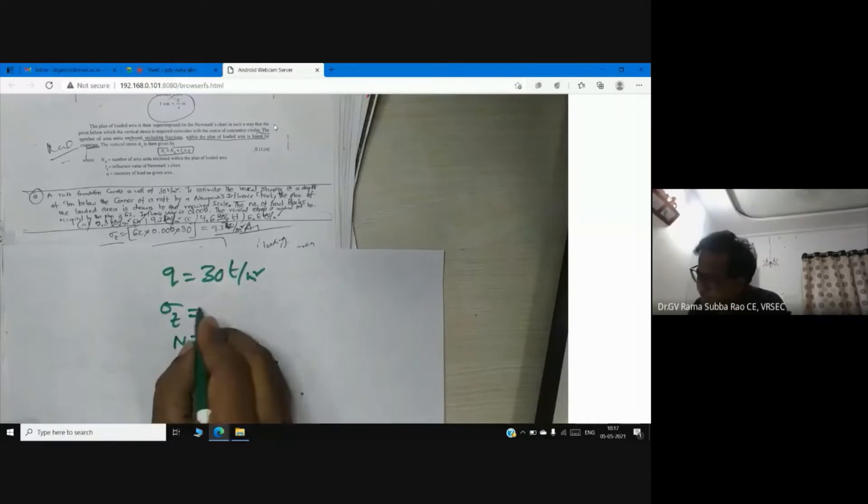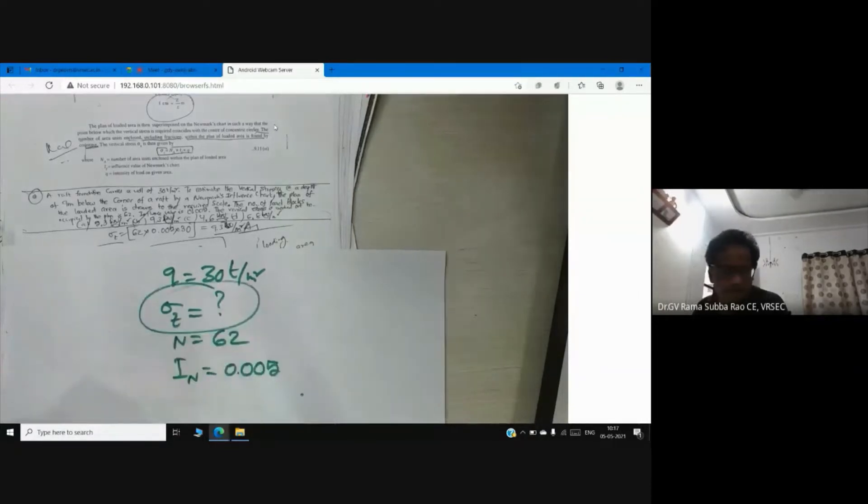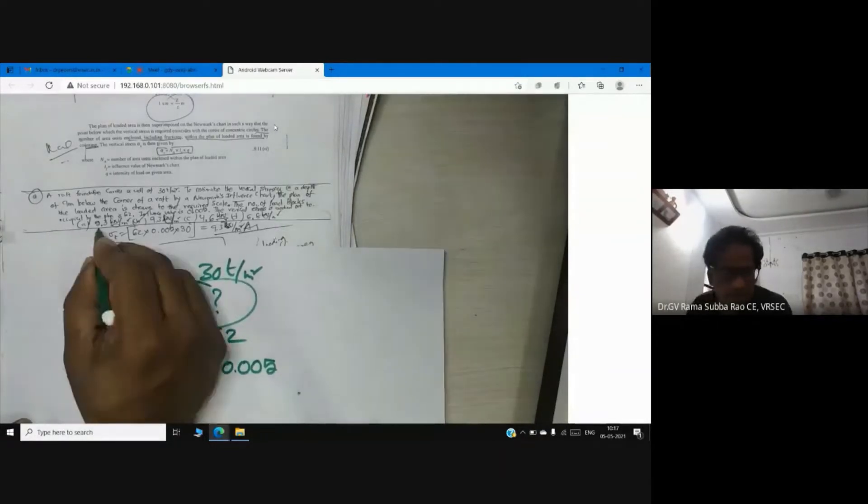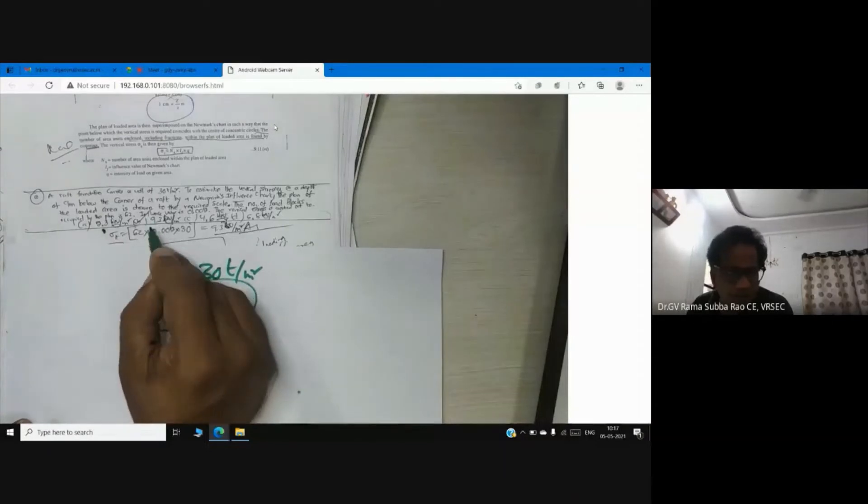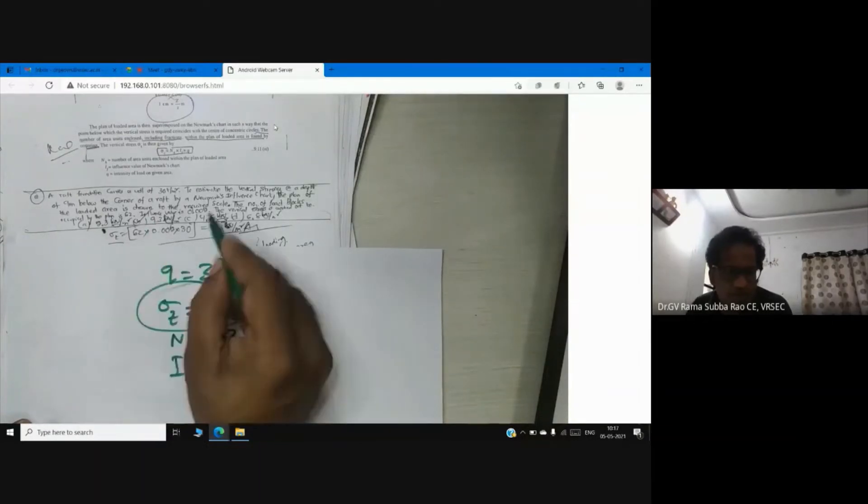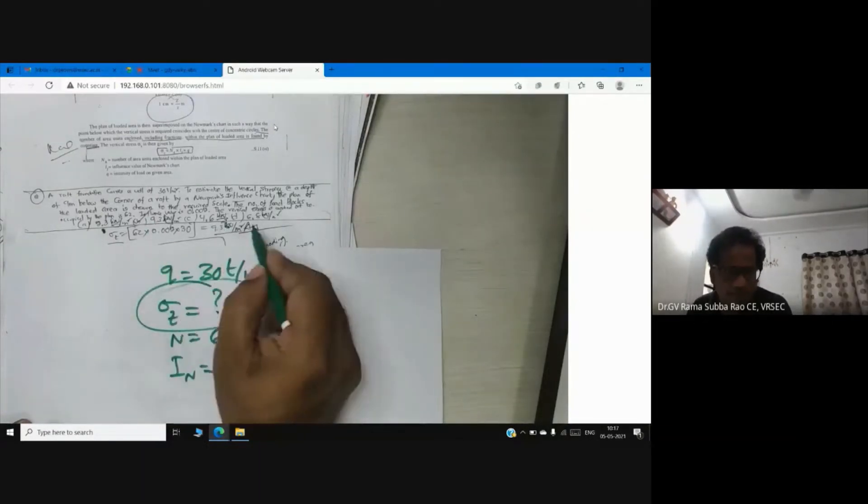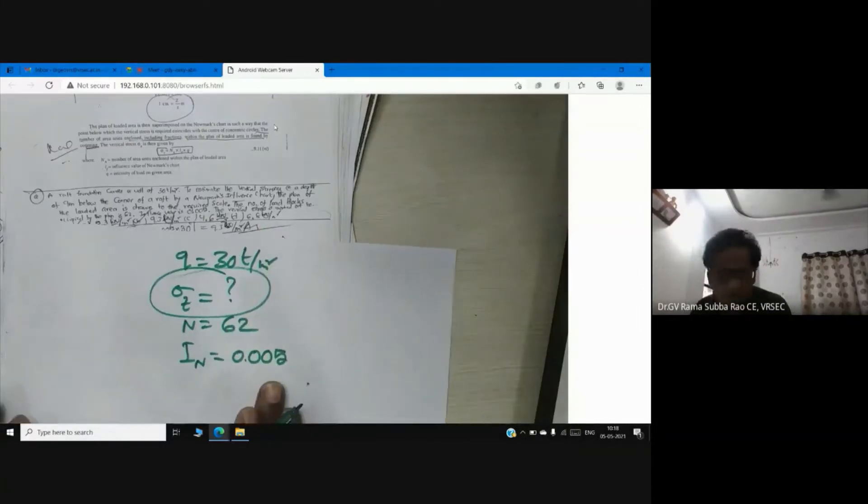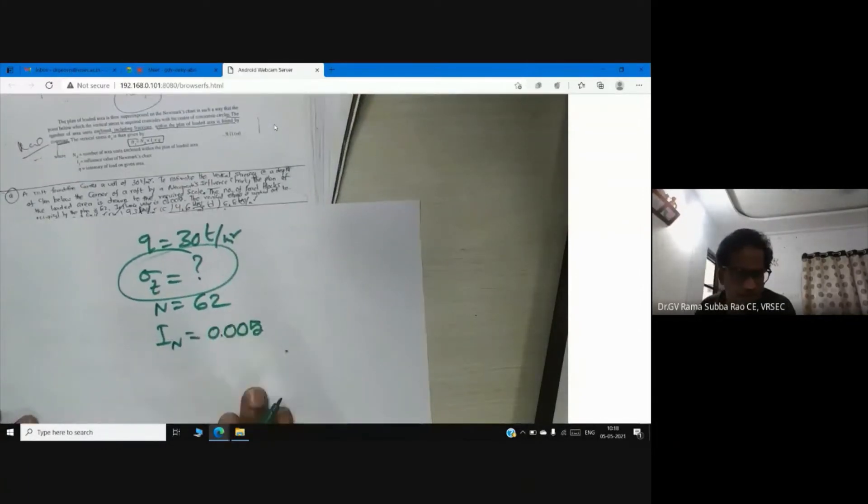So we need to calculate vertical stress. Get ready now, get ready to give the answer. Option A: 5.3. Option B: 9.3 ton per square meter. Option C: 4.6 ton per square meter. Option D: 6.8 ton per square meter. Please, all of you, respond to this question so that I will consider it as your attendance.